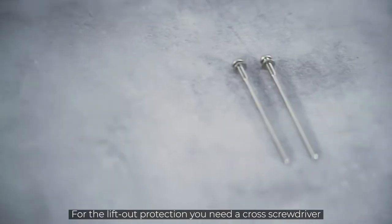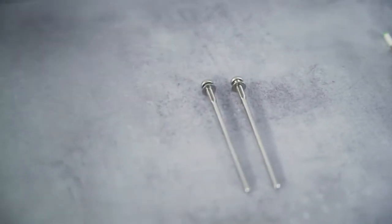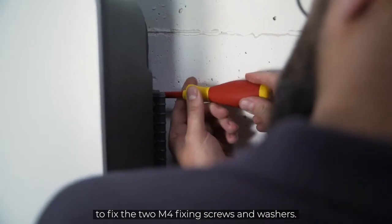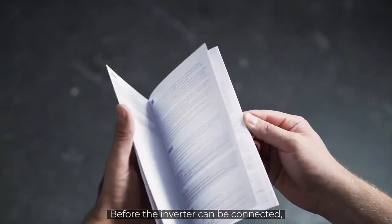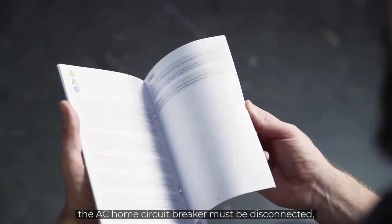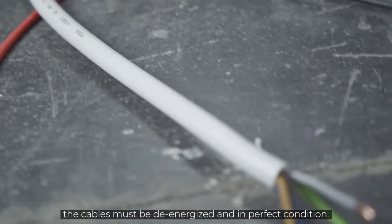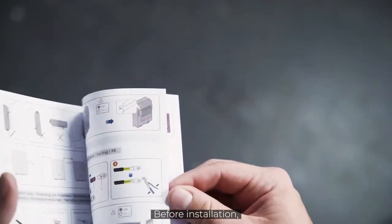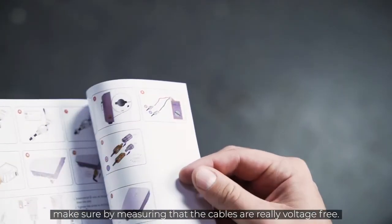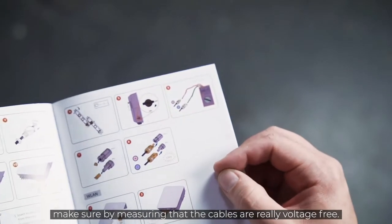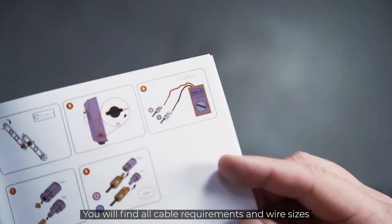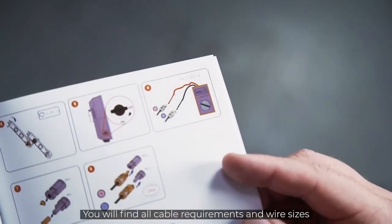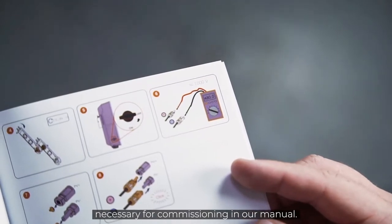For the lift-out protection, you need a cross-screw driver to fix the two M4 fixing screws and washers. Before the inverter can be connected, the AC home circuit breaker must be disconnected, the cables must be de-energized and in perfect condition. Before installation, make sure by measuring that the cables are really voltage-free. You will find all cable requirements and wire sizes necessary for commissioning in our manual.